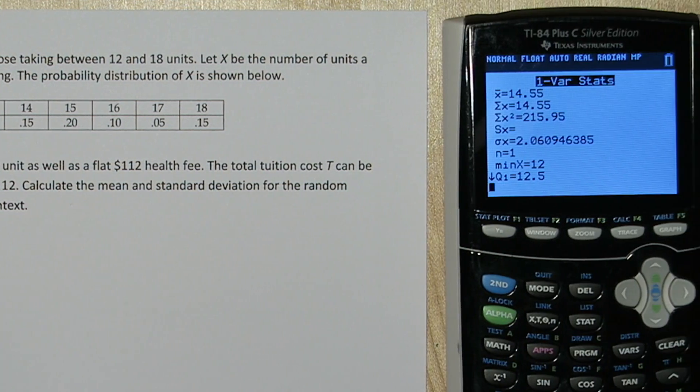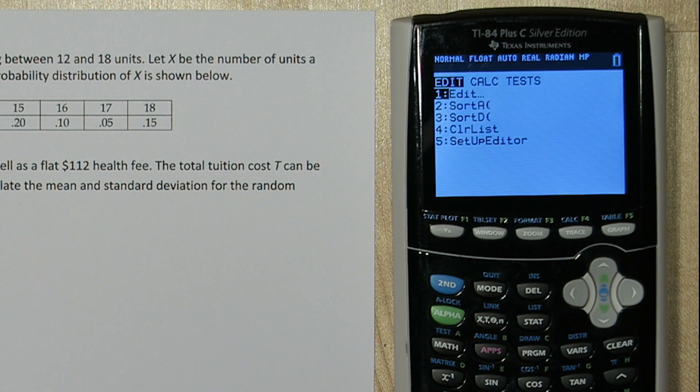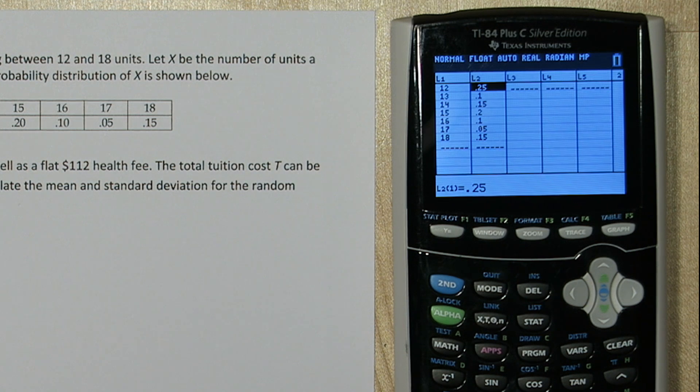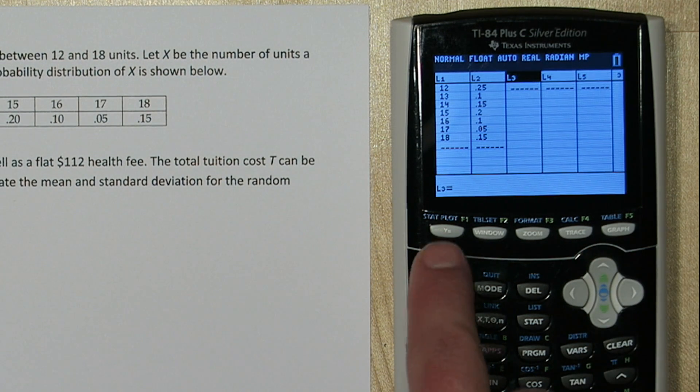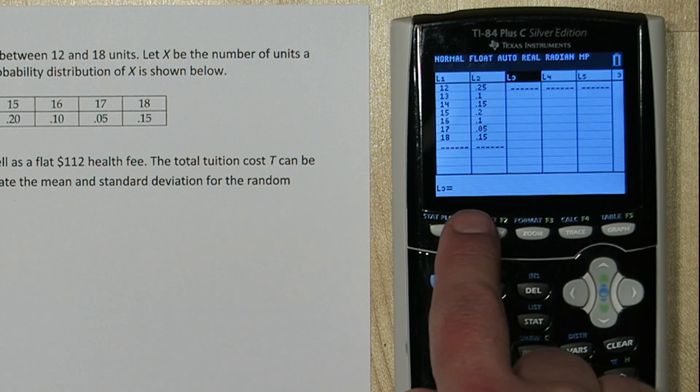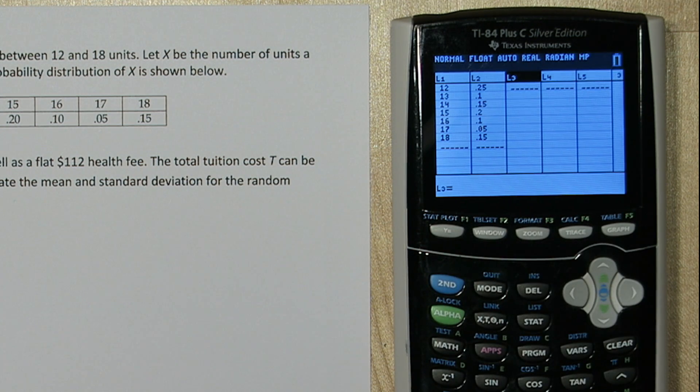We can do this on our list. If you press the stat button again, and then enter, we're going to make list 3 our random variable t. Press over to get to list 3, and then push up. This is our formula bar, and we can type in a formula to define list 3.